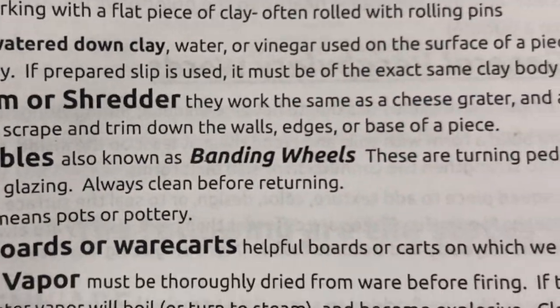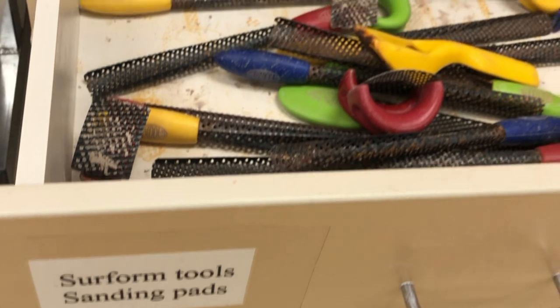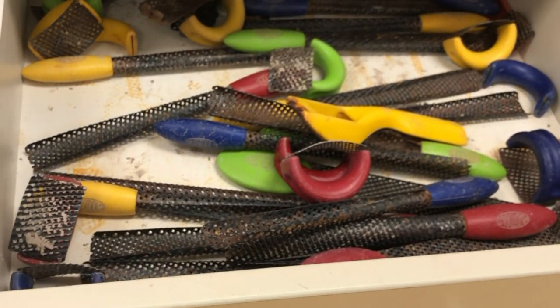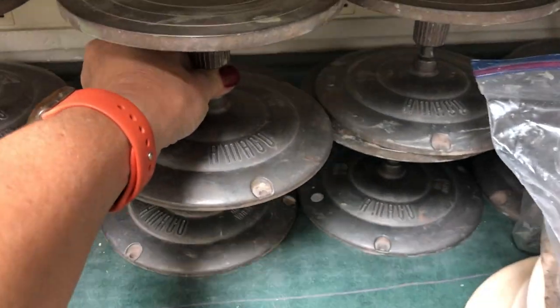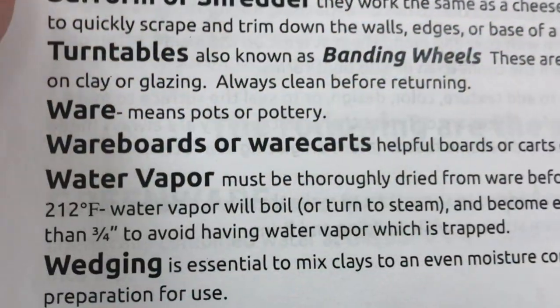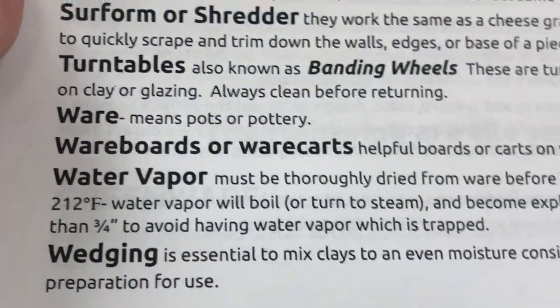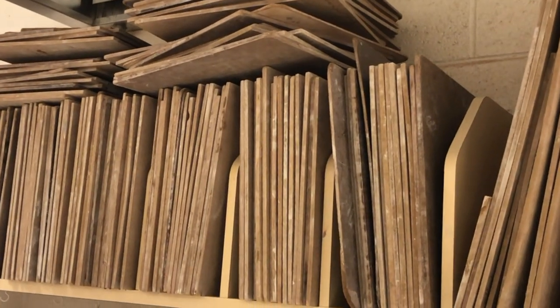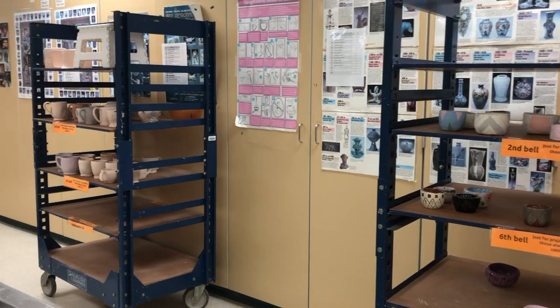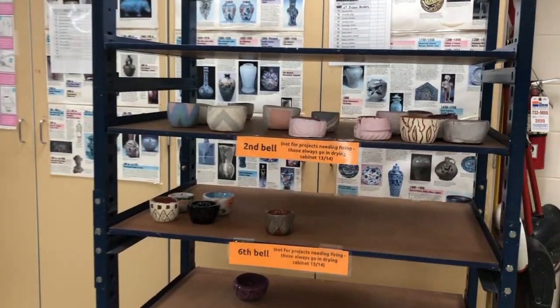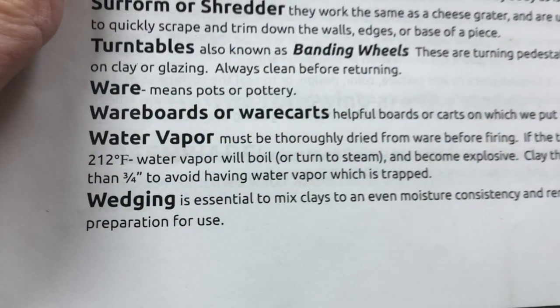Surforms, also called shredders, are mud tools that come in a variety of sizes and shapes. Turntables, also known as banding wheels, are what you put your projects on. Ware boards — 'ware' meaning pots or pottery — and ware carts are in the classroom for transporting your pots.